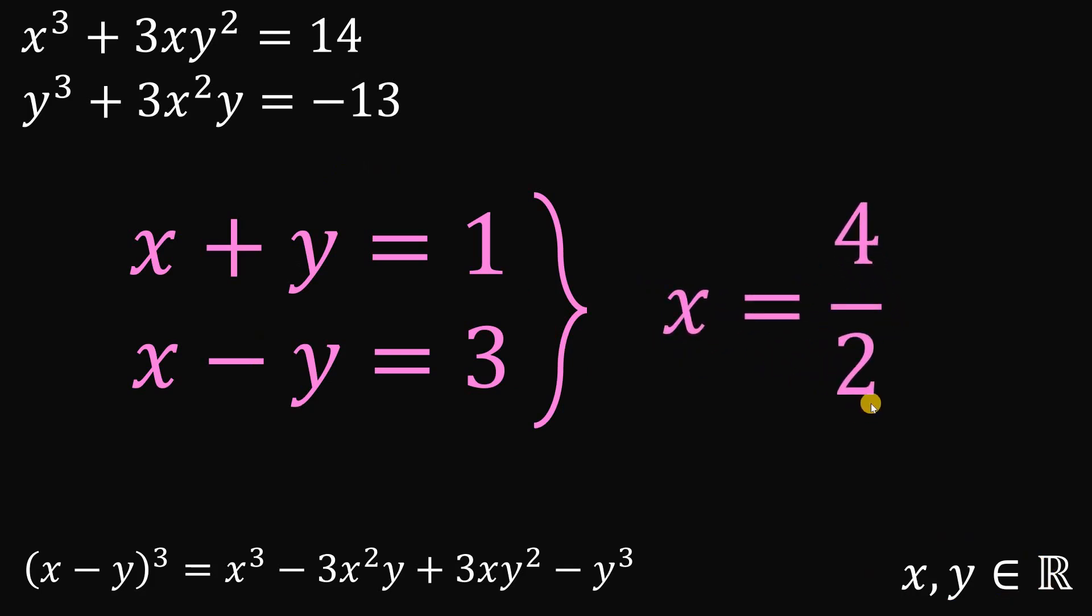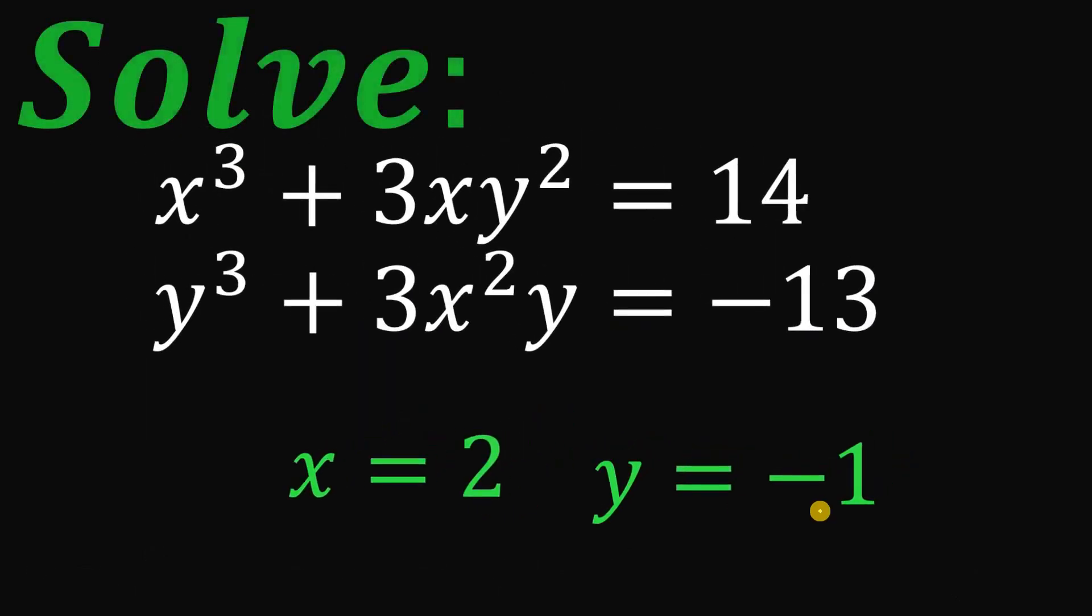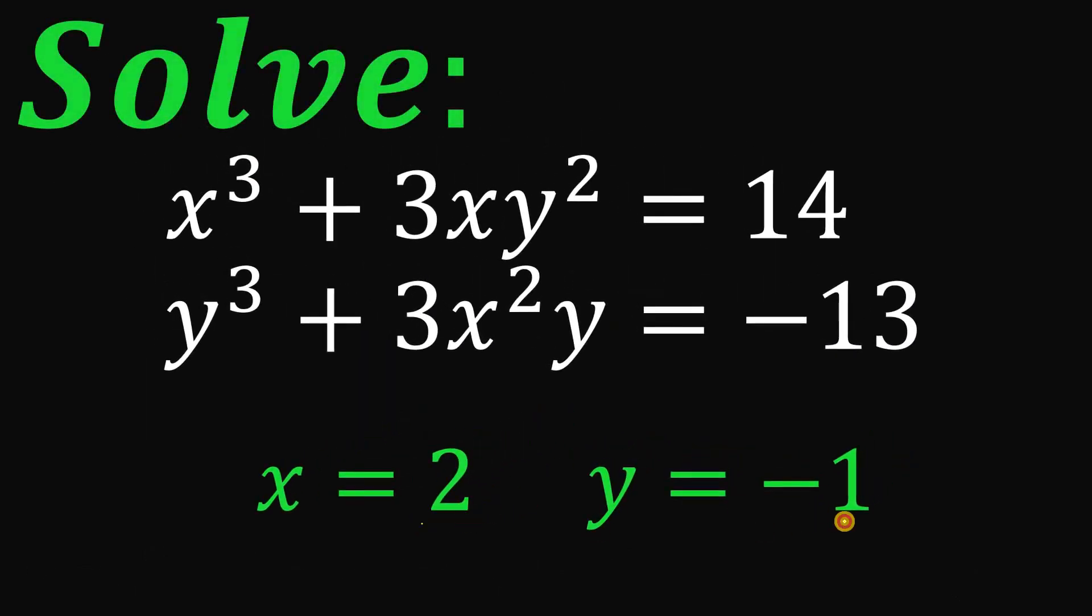So x is 2. And if x is 2, so we have 2 plus something equals 1. Definitely, y equals negative 1. Therefore, the only real values of x and y that satisfy this equation are 2 and -1.